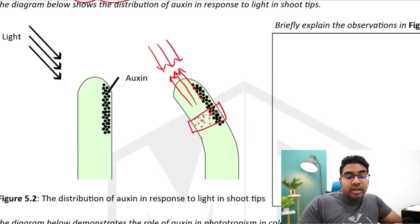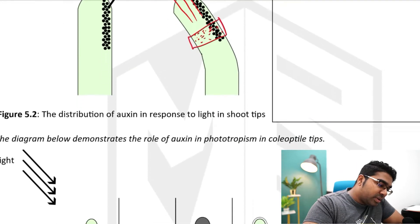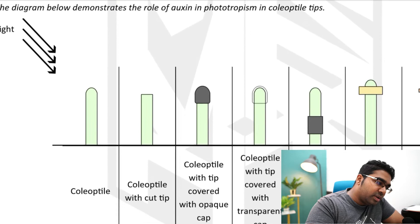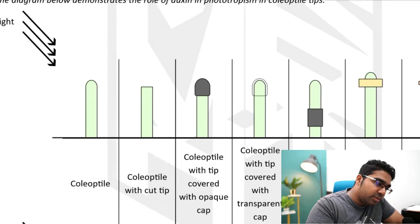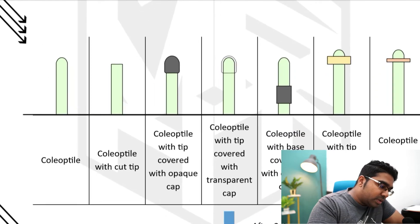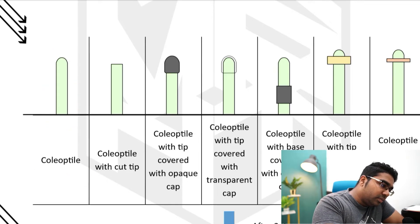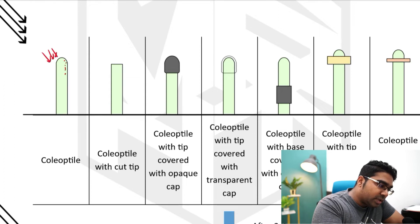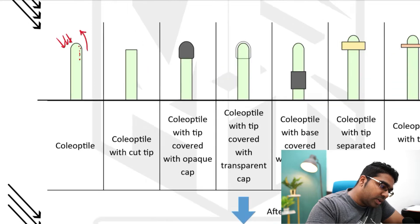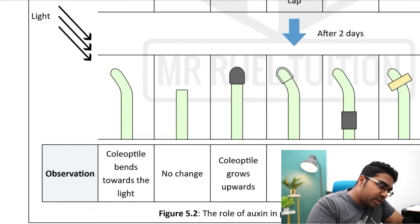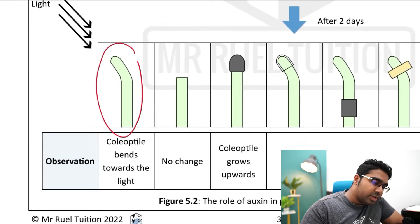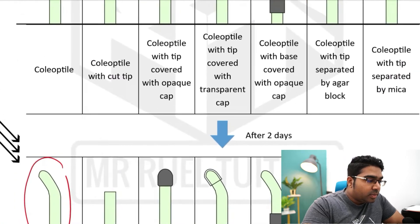Let's look at some experiments to see what happens in various scenarios. The first one is the control — you just have the normal coleoptile. When light hits one side, all the auxin gathers on the other side, causing the coleoptile to bend towards the light, which is exactly what we see here.